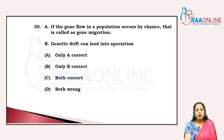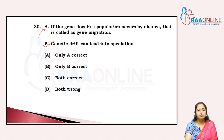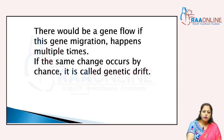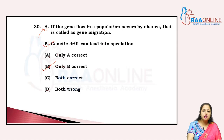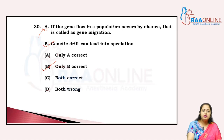If gene flow in a population occurs by chance, is it called gene migration? No. Genetic drift can lead to speciation — that is correct. So the answer is only B. Gene flow occurs when gene migration happens many times. If changes occur by chance, that is called genetic drift, not gene migration.